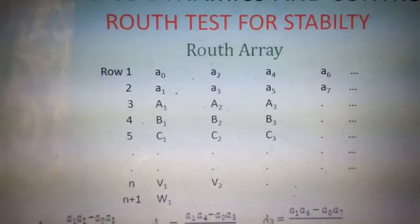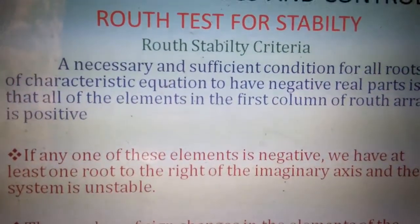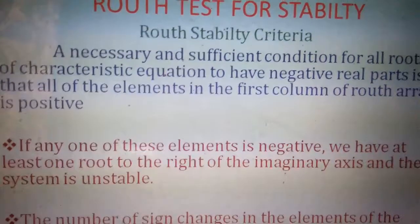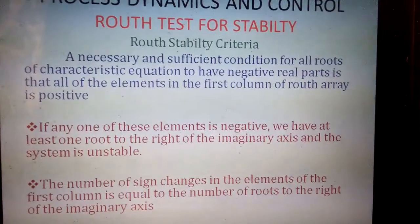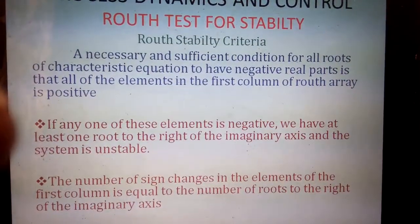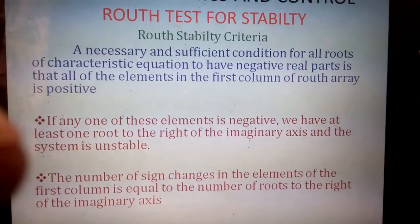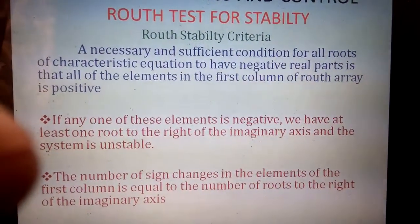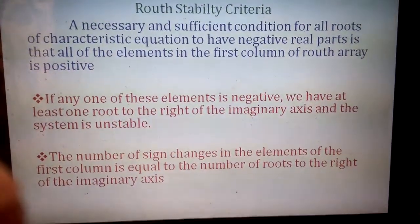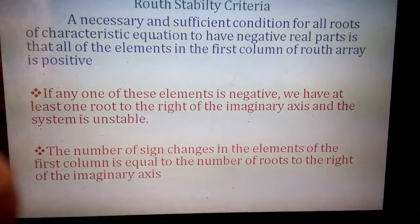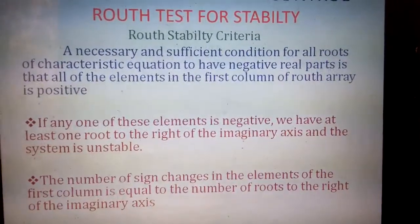The number of elements with negative signs in the first column represents the number of roots which lie on the right half of the complex plane. The Routh stability criteria: a necessary and sufficient condition for all the roots of the characteristic equation to have negative real parts is that all of the elements in the first column of the Routh array are positive. The number of sign changes in the first column represents the number of roots lying on the right half of the complex plane.